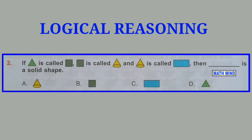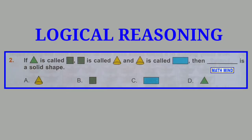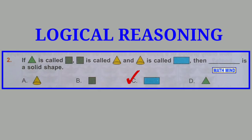Question number 2: If triangle is called square, square is called cone and cone is called rectangle, then dash is a solid object. Clearly cone is a solid object, but in this question it is said cone is called rectangle. It means rectangle represents cone. So correct option is C: Rectangle.